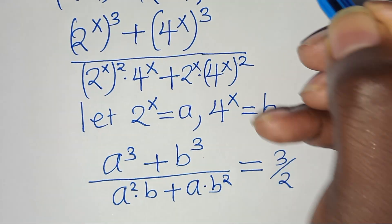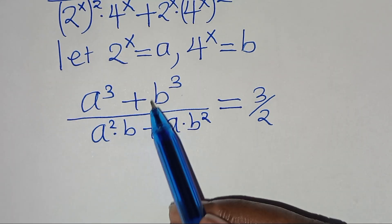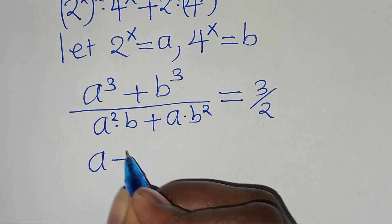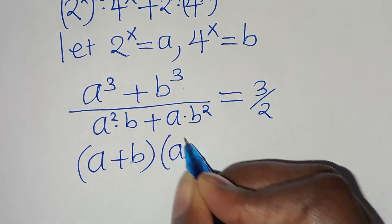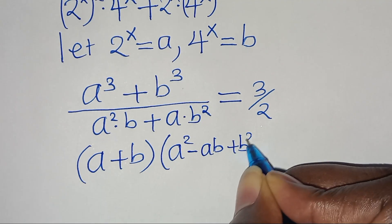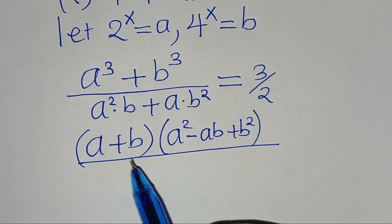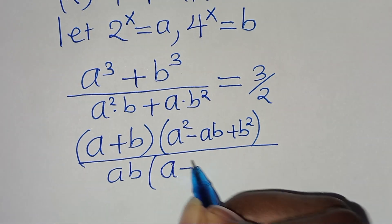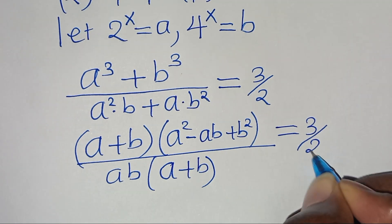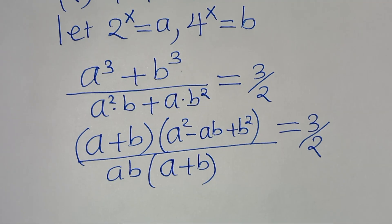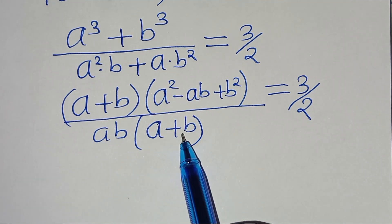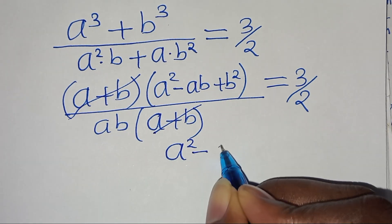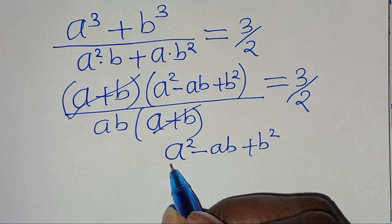Now, a to the power of 3 plus b to the power of 3 is the sum of two cubes, which we can express as (a + b) times (a squared minus ab plus b squared). In the denominator, ab is common, so we can factor out ab, so that in the parenthesis we have (a + b). This is equal to 3 over 2.